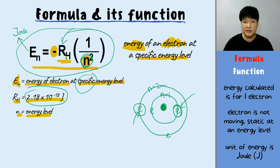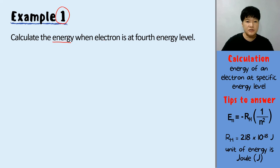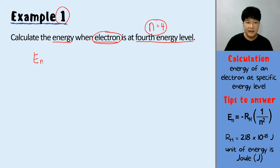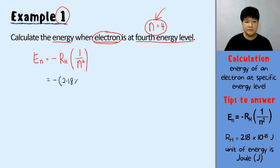Let's try the first example: calculate the energy when the electron is at energy level 4, meaning N equals 4. The electron is at a very specific energy level and not moving. Therefore, En equals negative Rh times 1 over N squared. The Rydberg constant is 2.18 times 10 to the power of negative 18 joules, and N is 4 squared. The final answer is negative 1.3625 times 10 to the power of negative 19 joules.